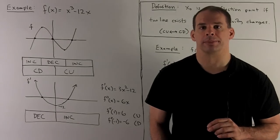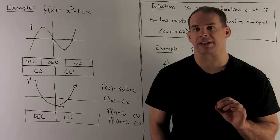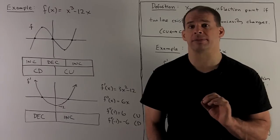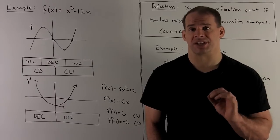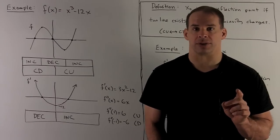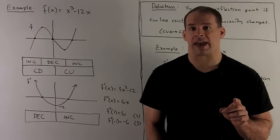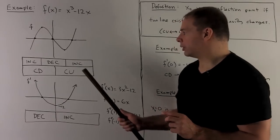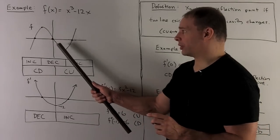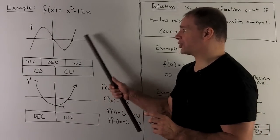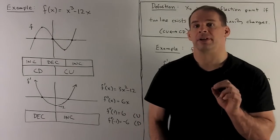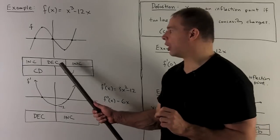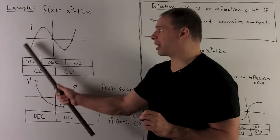Let's look at an example. We have f(x) = x³ − 12x. The first derivative is 3x² − 12, and the second derivative is 6x. Now take a look at the second derivative to check concavity. If x is greater than zero, then 6x is greater than zero, so it'll be concave up on that region — and looking at the graph, that bears out. If x is less than zero, 6x is less than zero, so it's concave down on that half of the graph, and that bears out also.